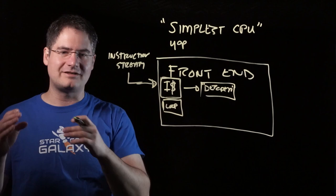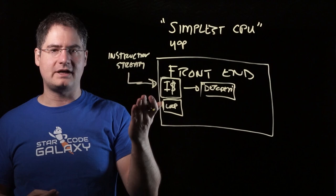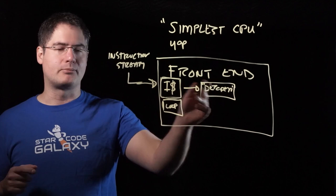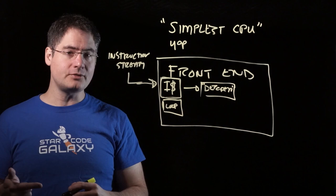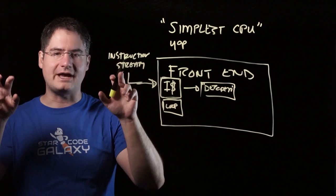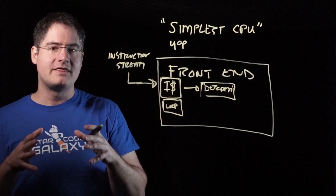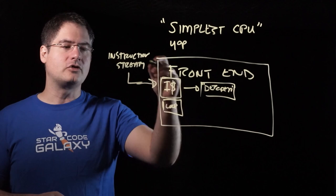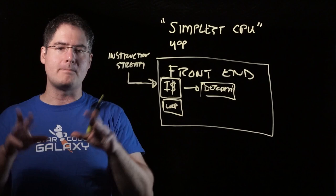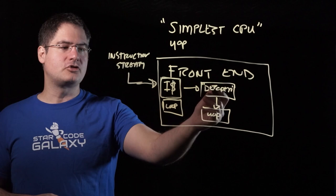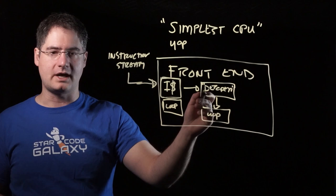Then there's a back end. Up here we've got the idea of grabbing instructions, going through a cache, going through a decoder, turning them into micro-ops, possibly storing those micro-ops in a cache. Then when we actually know what micro-ops we're going to execute, we send those off to actually be done. Up here in the front end, we've done nothing effectively — all we're doing is trying to figure out what micro-ops to run. That's the entire job of the front end.